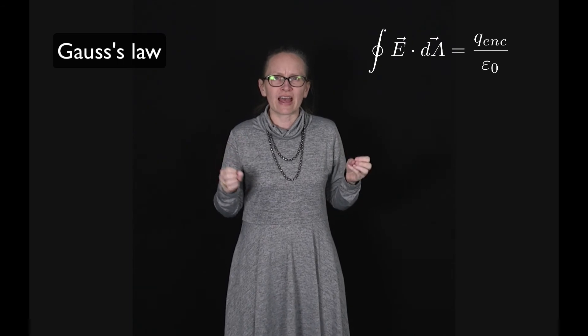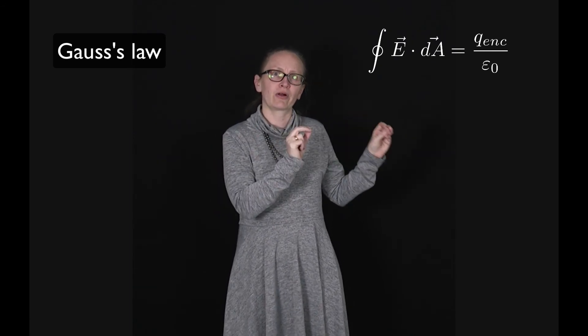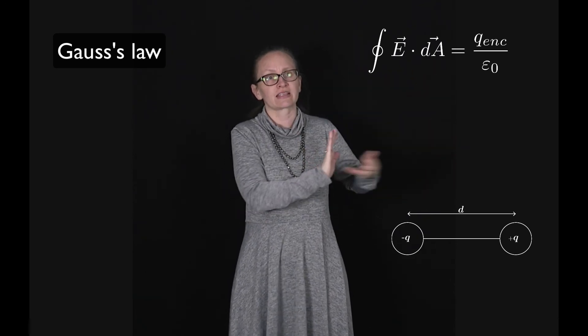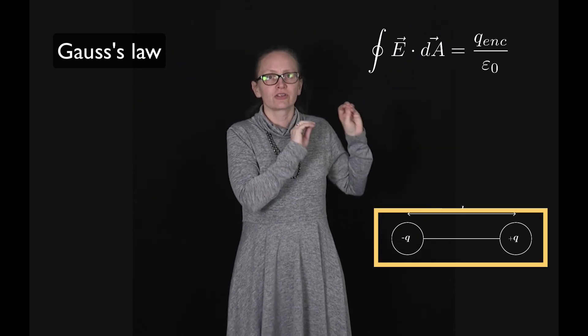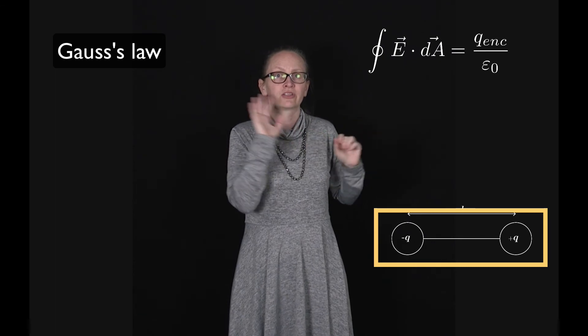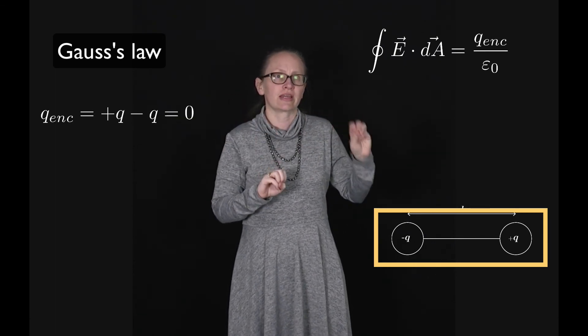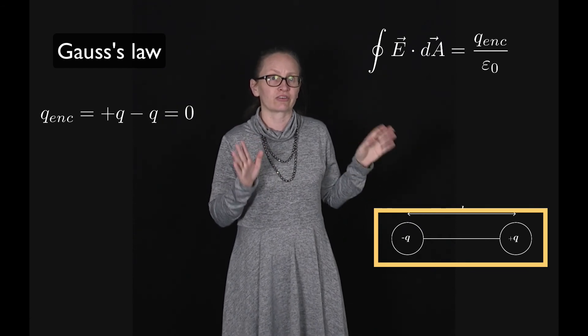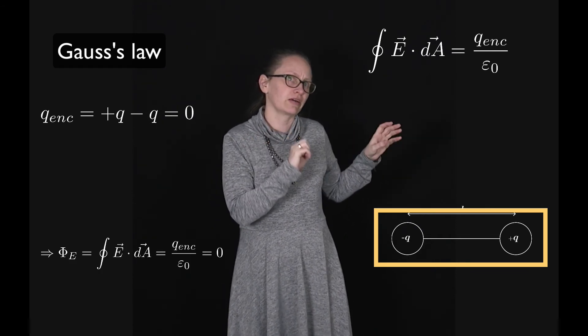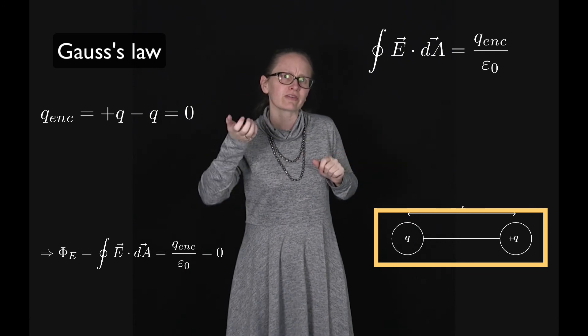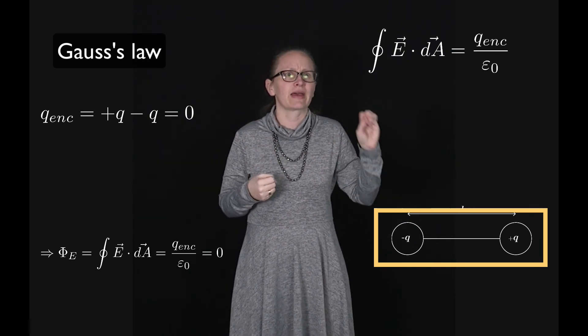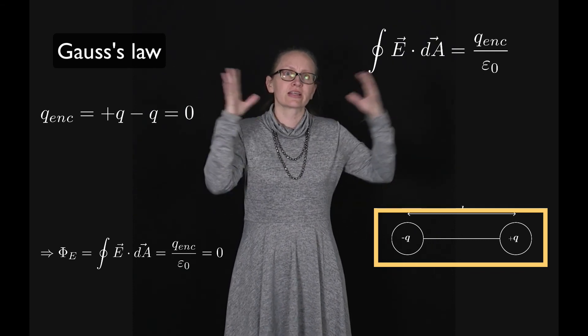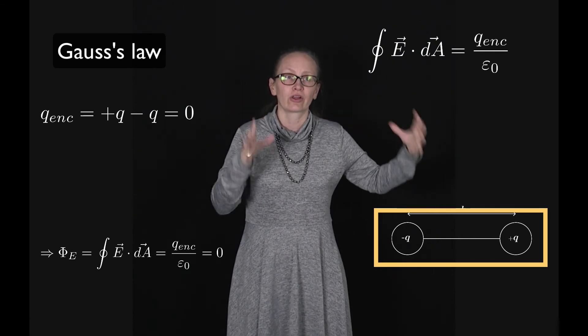For example, let's consider our dipole again so we've got a charge of plus Q and minus Q, and let's put it within some closed surface. In this case the enclosed charge is plus Q minus Q which is equal to zero, so there is zero enclosed charge. So in this case we know that the electric flux is equal to zero. If the electric flux is equal to zero you might think that means that the electric field is equal to zero, but that's not the case. This just tells us the flux through the entire closed surface.